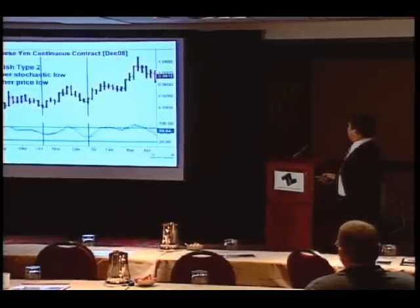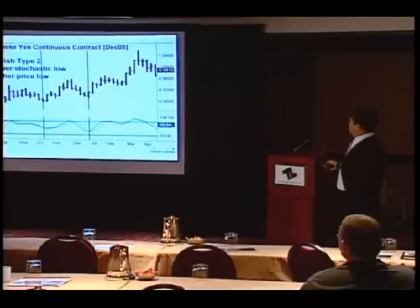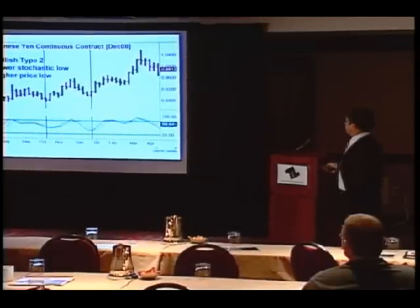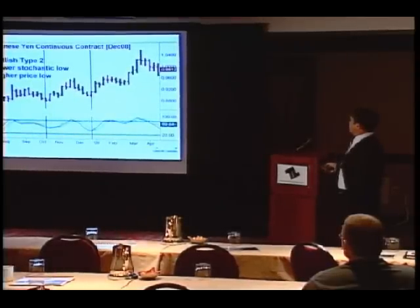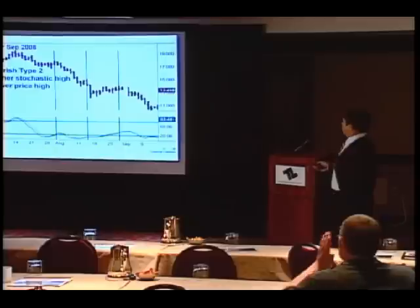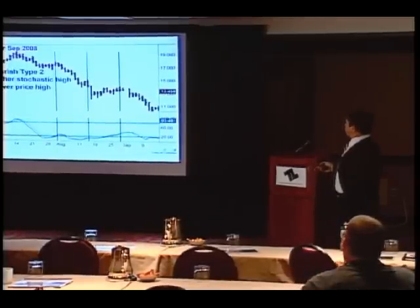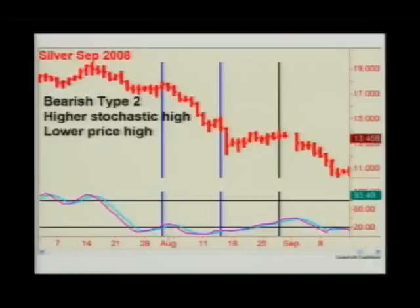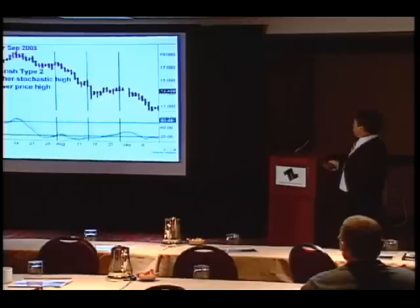Another example of the same: price low, stochastic low, higher price low, lower stochastic low. We get the buy signal when the faster K line crosses above the D line on a closing basis. Once you're in, place a stop below that low. Type 2 bearish divergence: with a stochastic swing high, another smaller swing high, and a higher stochastic high here with a much lower price high than either of the previous price highs.